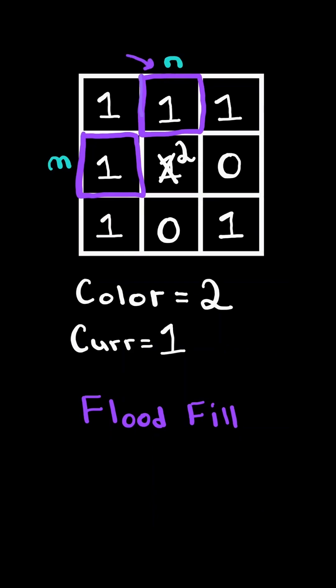For example, let's consider this top pixel. We update its value to the new color 2 and we go and check all adjacent pixels. We only consider pixels that have the same value as the current pixel 1 and we repeat the process with those new pixels.